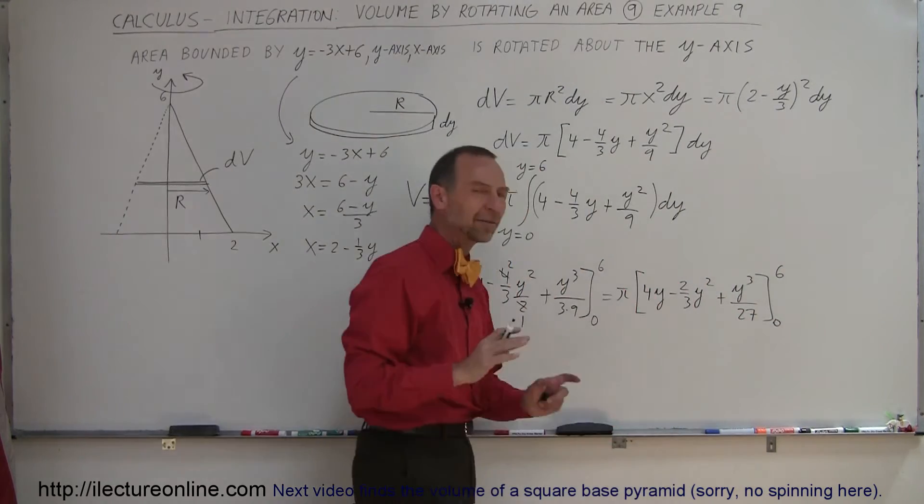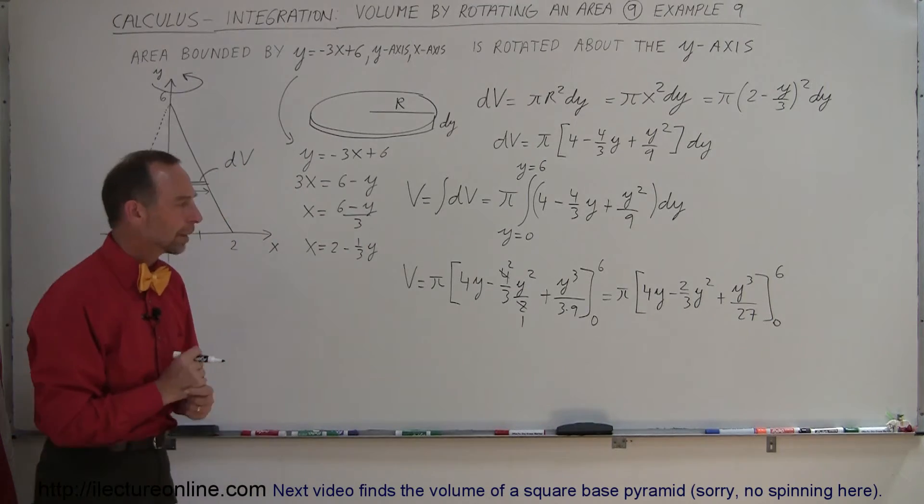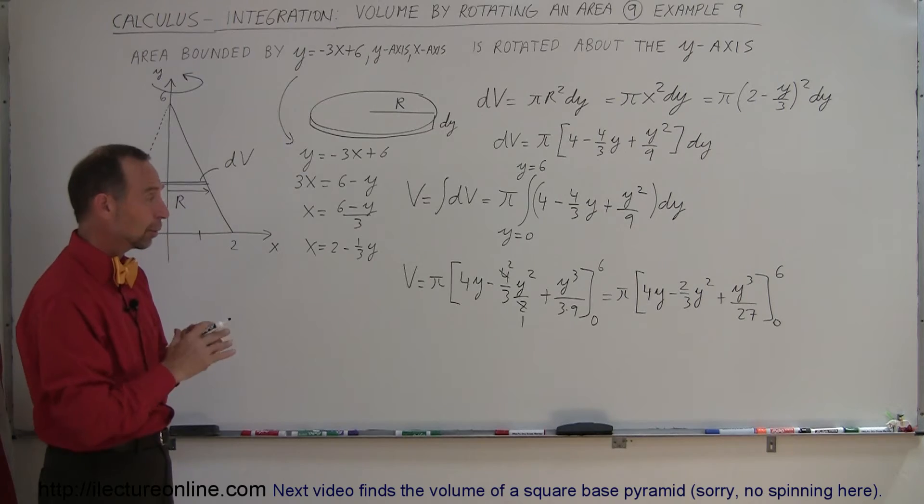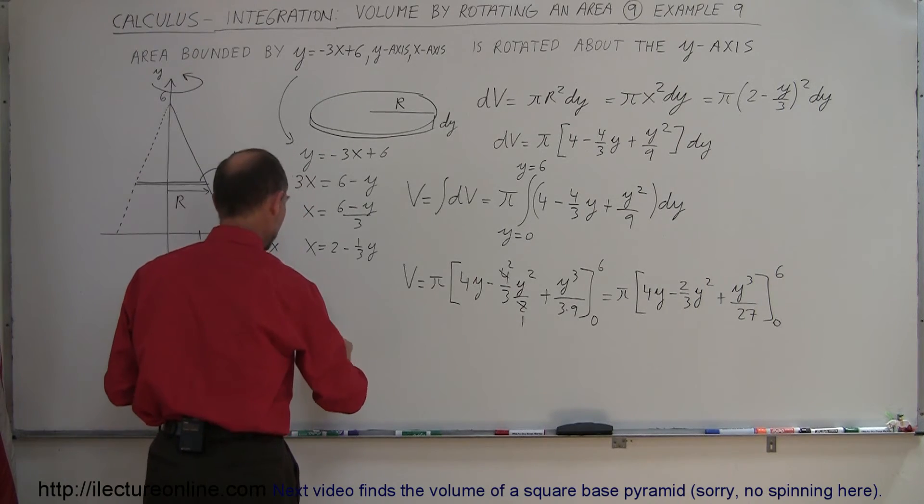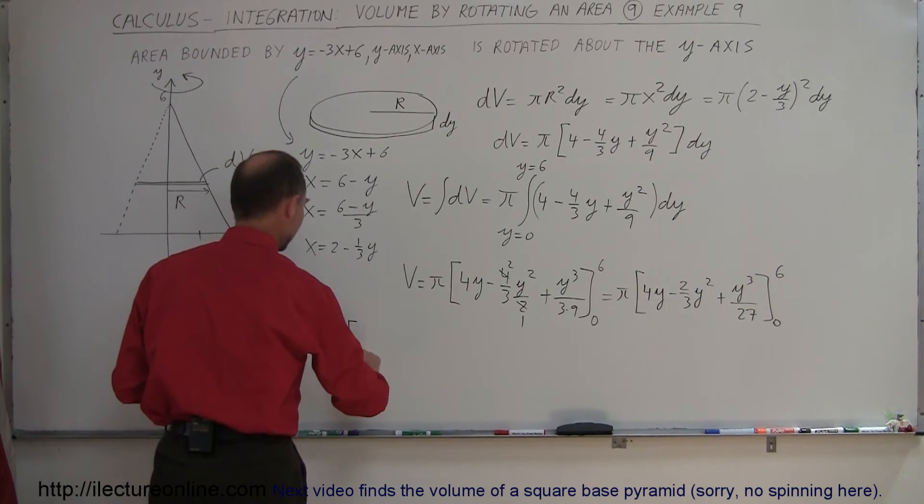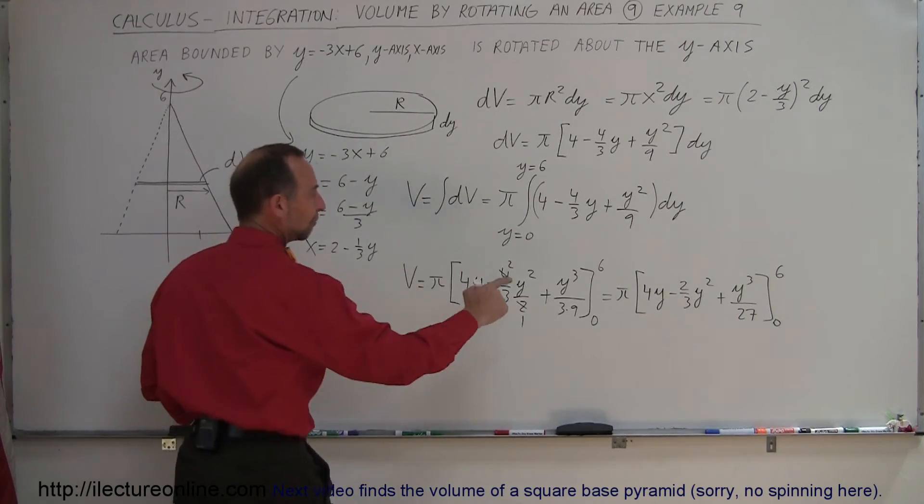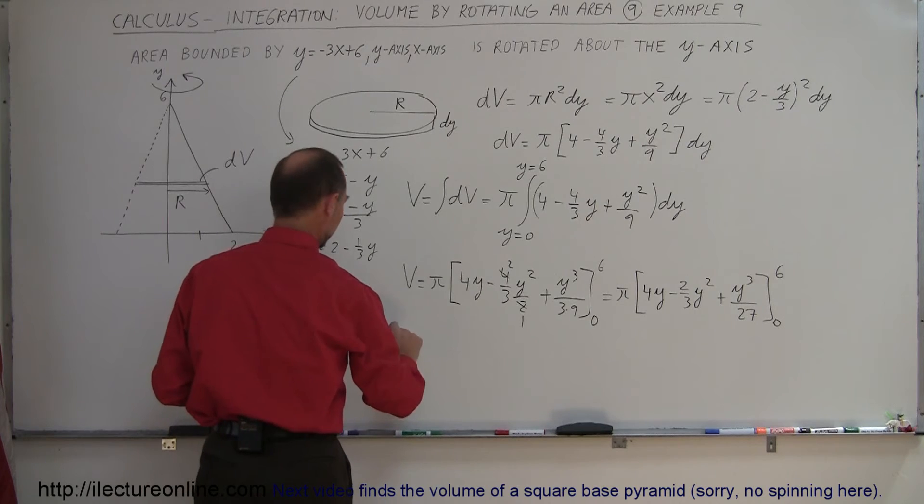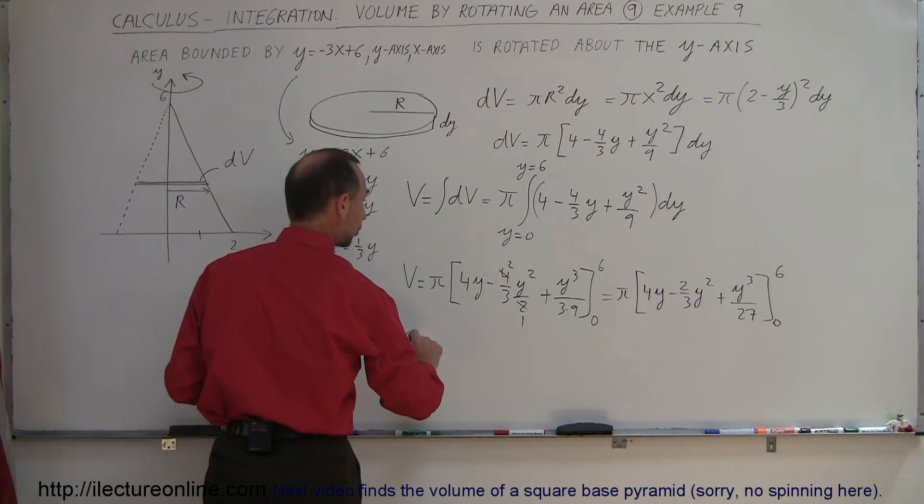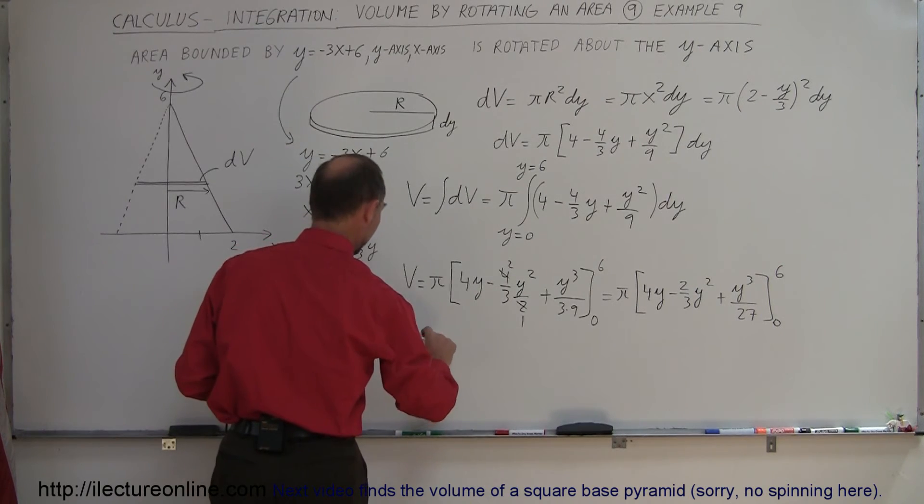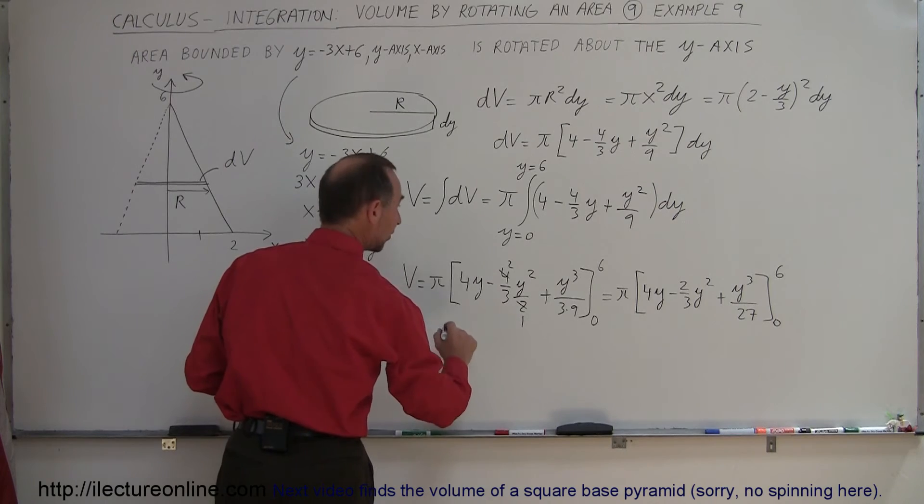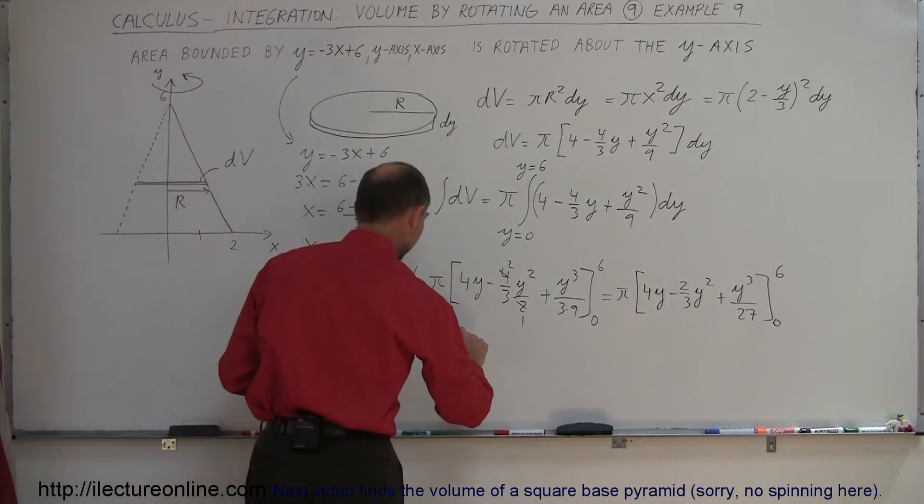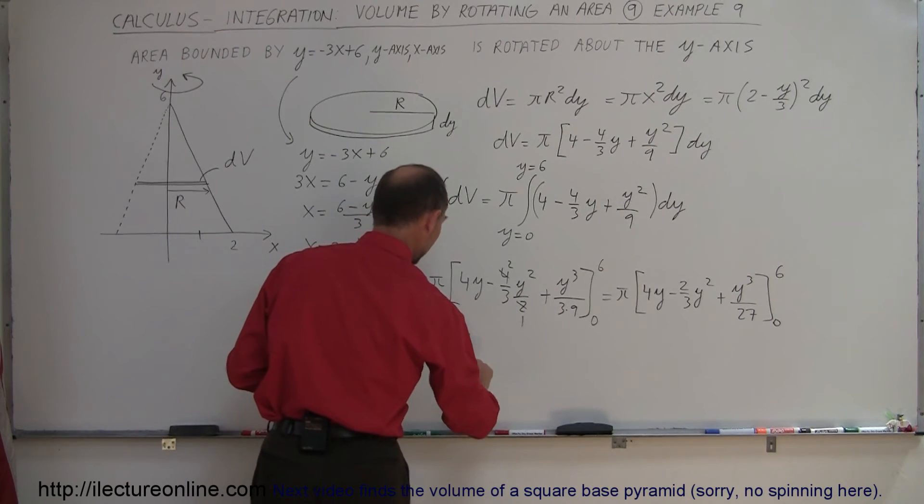I always like to have it as clean as possible so you don't make mistakes. When we plug in the lower limit, we get nothing but 0 so we can ignore the lower limit. We only need to worry about the upper limit. So v is equal to π times the upper limit. So that would be 4 times 6, which is 24, minus 2 thirds times 6 squared, which is 36. And plus 6 cubed, that's 6 times 6 is 36, times 6 is 216, divided by 27.